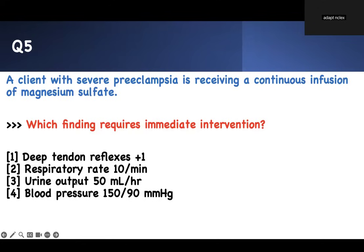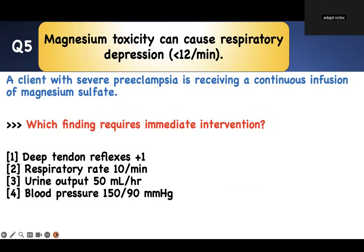Number five: a client with severe pre-eclampsia is receiving continuous infusion of magnesium sulfate. Why? Because we want to prevent eclampsia and seizures. With which finding does the nurse require immediate intervention? Go for the concept. Ask yourself: magnesium — what is its function? It slows things down. Therefore, everything goes down: reflexes go down, respiratory rate goes down. Urine output at 550 mL per hour is a lot — that's not going down. Blood pressure 150 over 90 is not that bad. Between reflexes and respiratory rate going down, respiratory rate is the priority — that's more serious. Number two is the right answer.